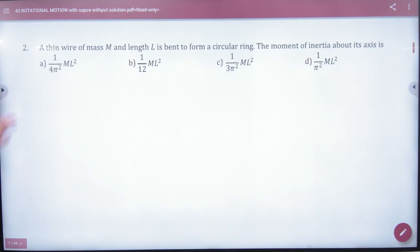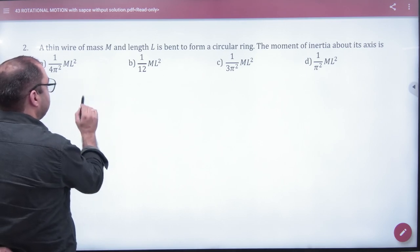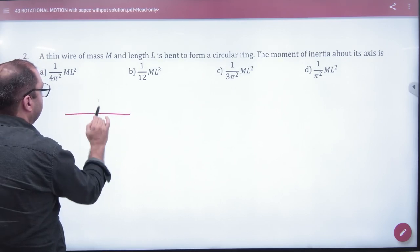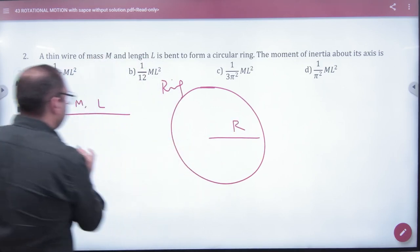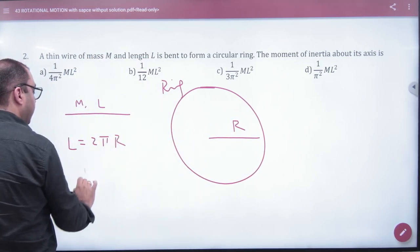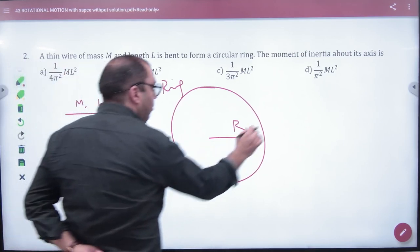Next, question number two. In this question there's a thin wire with mass M and length L. A wire with mass M and length L has made a ring. What will be the radius? The circumference is 2πR, so the value will be L/2π.